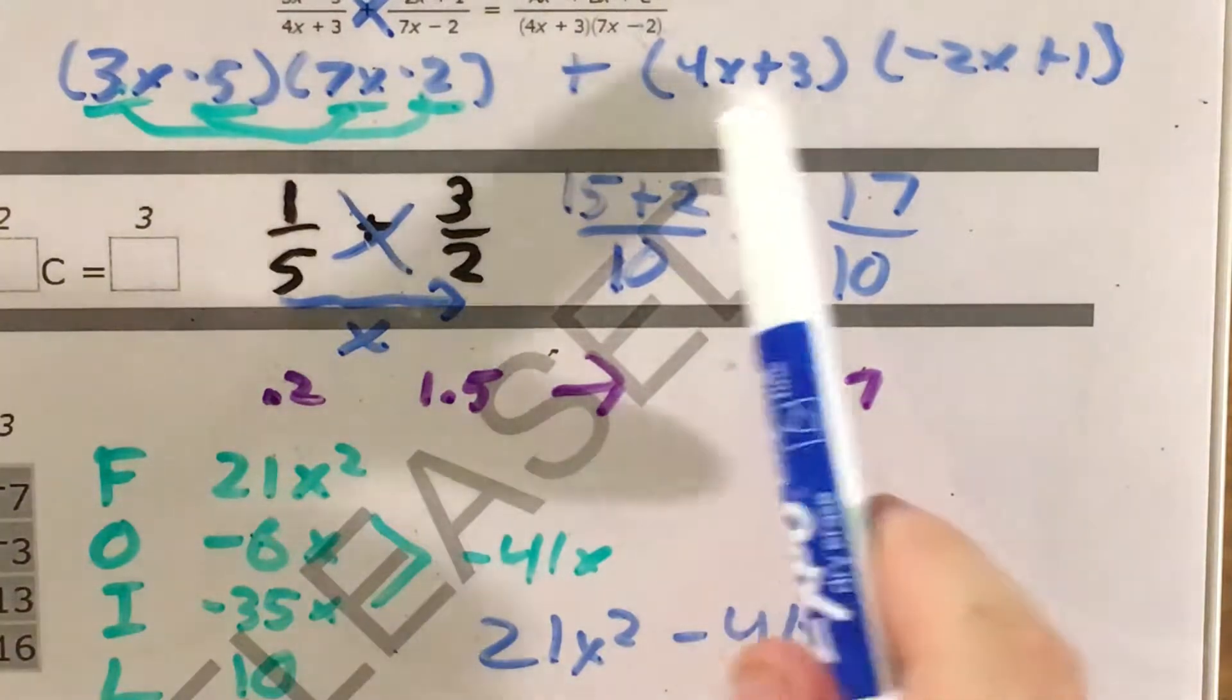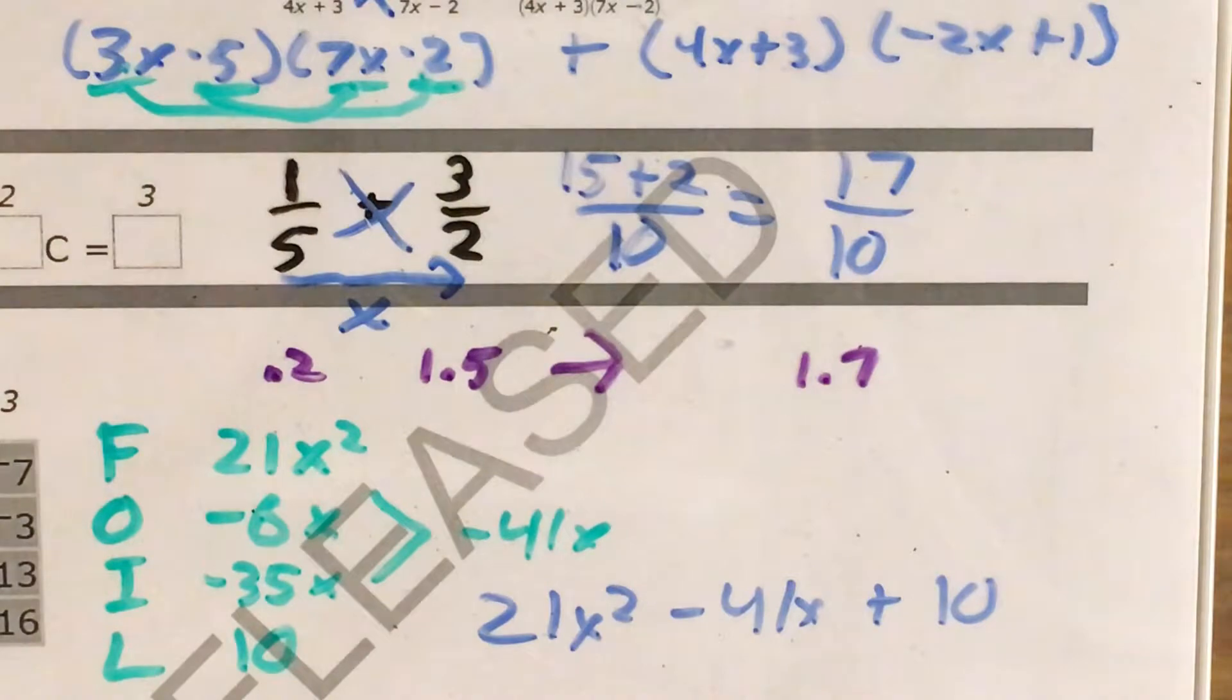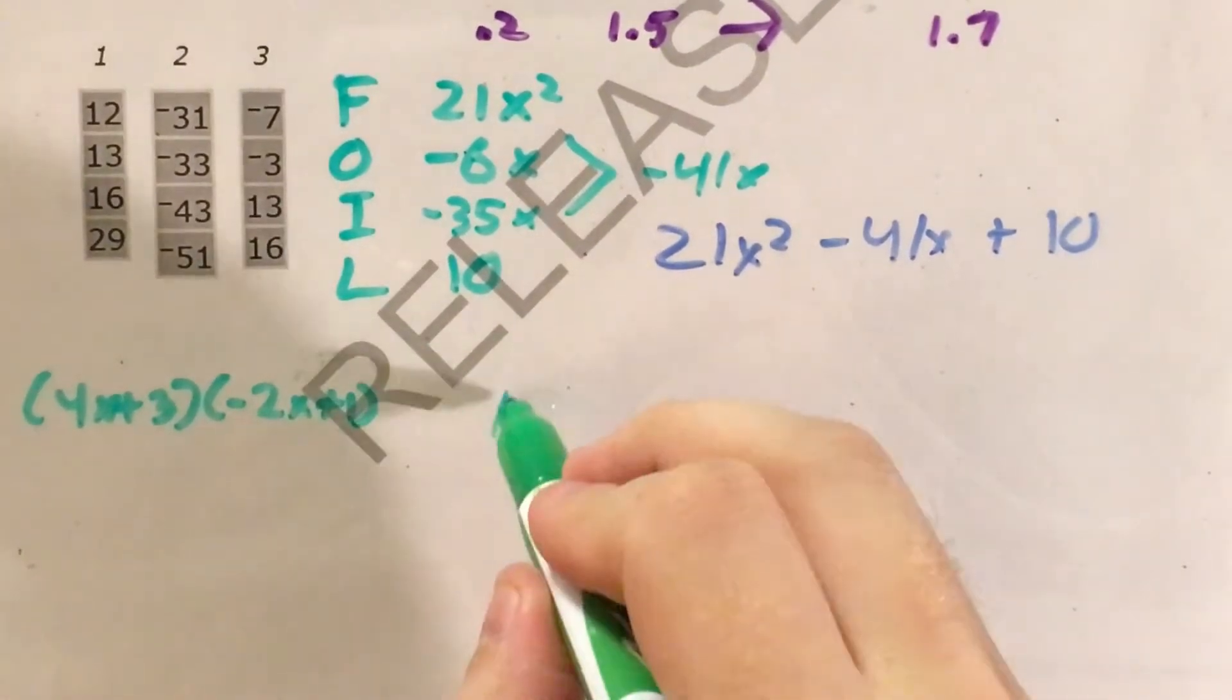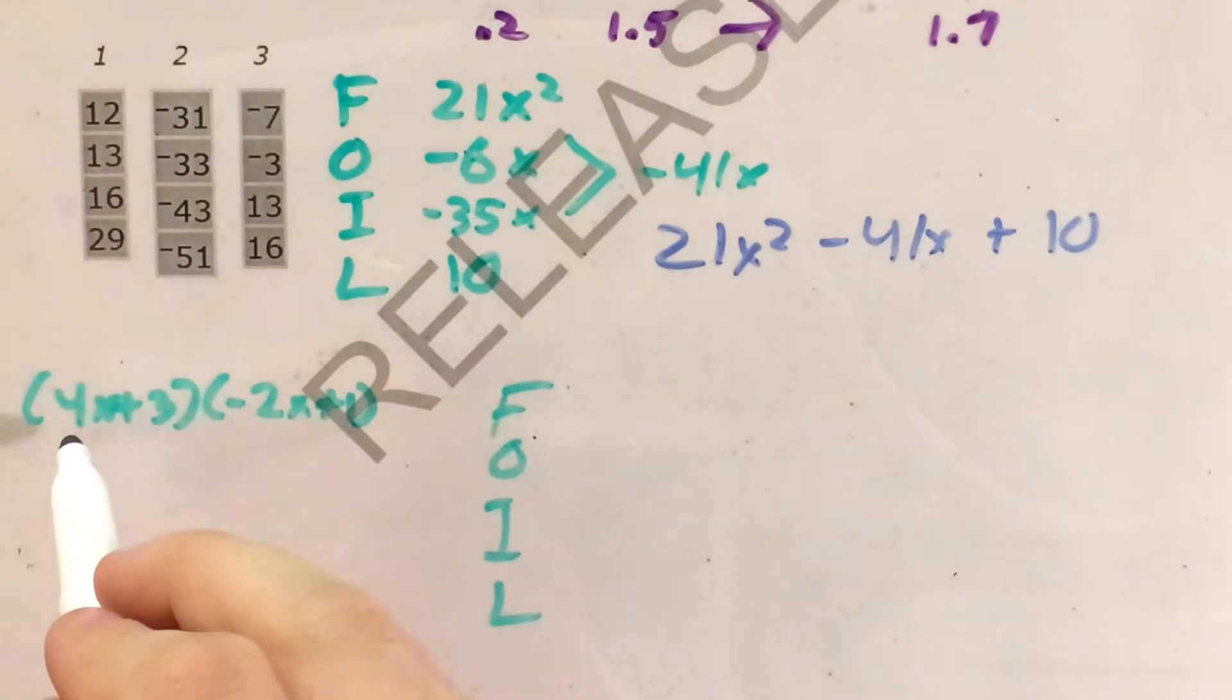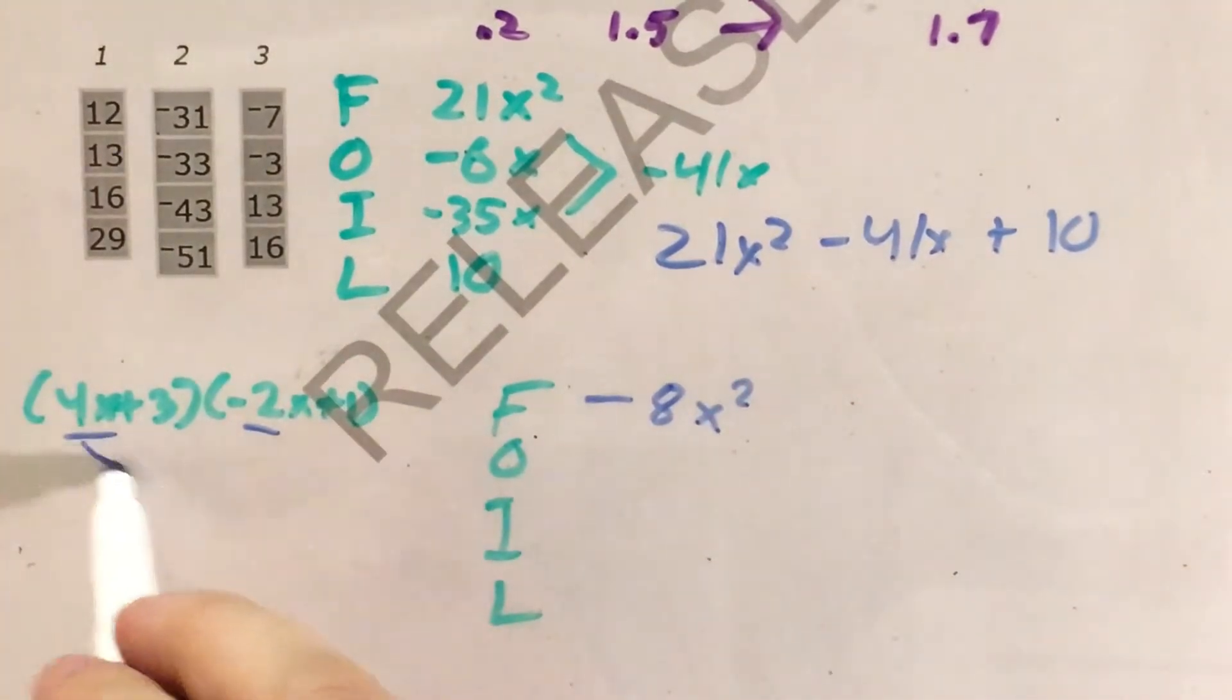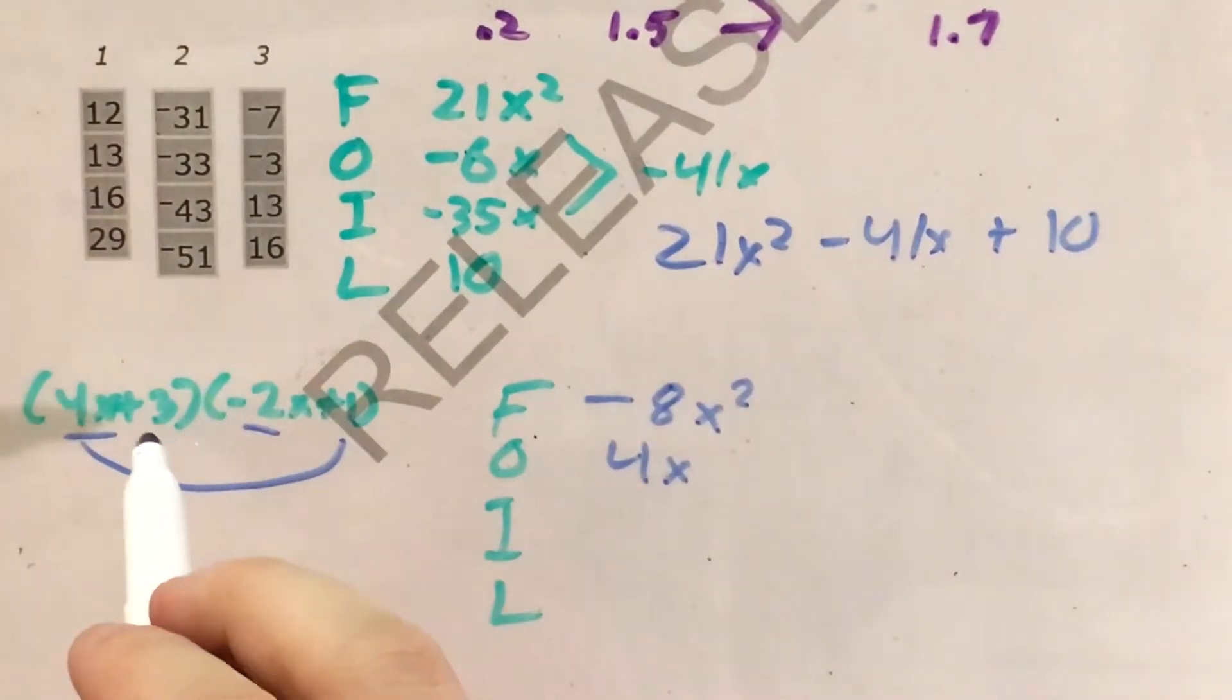Now I need to do the same thing for this set of binomials, 4x plus 3 and negative 2x plus 1. So let me come down. Write that over again. We will use FOIL again to multiply these. So first, 4x and negative 2x gives me negative 8x squared. Outside, 4x times 1 is just 4x.